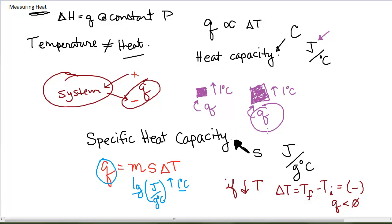Watch your signs. If you think of the change in temperature as an absolute value, you will numerically calculate the correct numerical value of Q, but your sign may be wrong. So you do want to keep track of your sign.